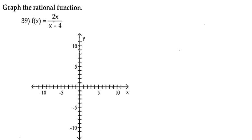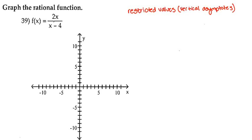Hey guys, for number 39, we're going to graph the rational function. There are a couple of steps we need to take in order to completely graph the rational function: find our restricted values to see if there are any vertical asymptotes, check for horizontal asymptotes, and then find our x and y intercepts.